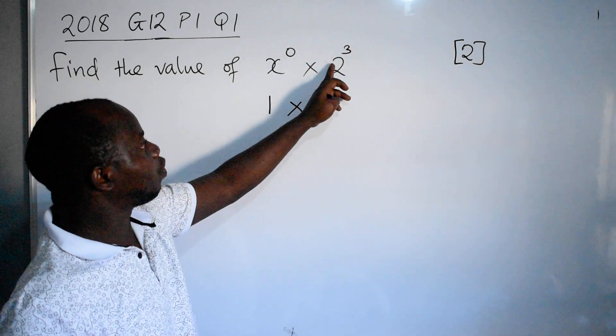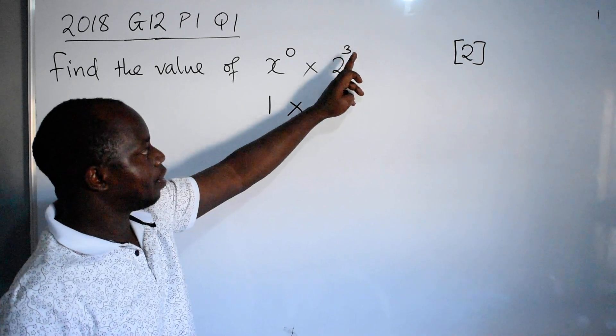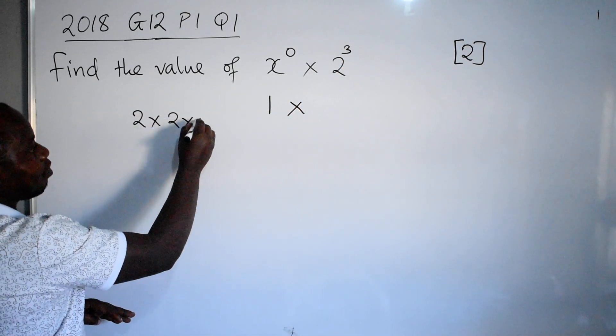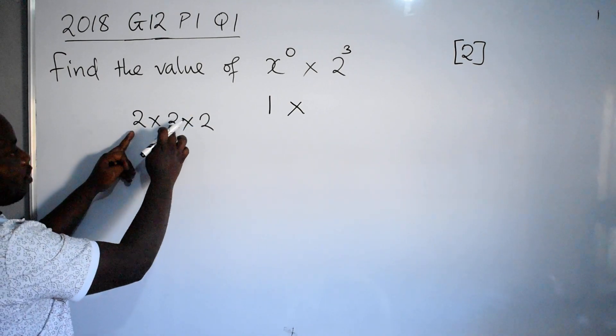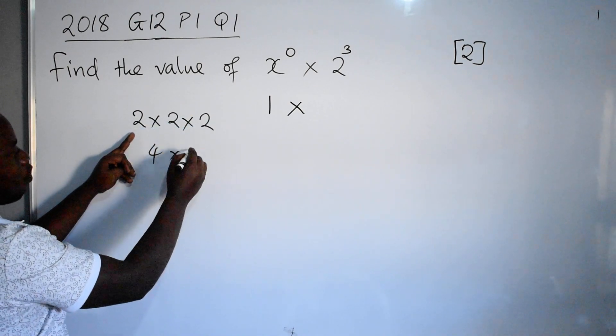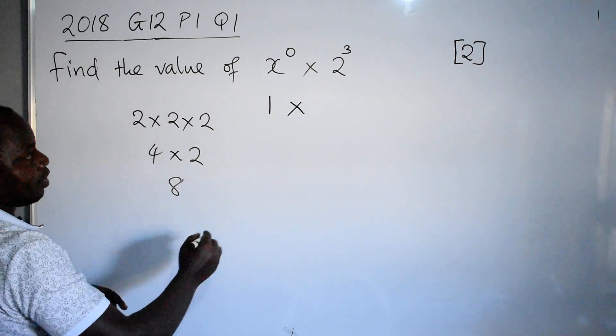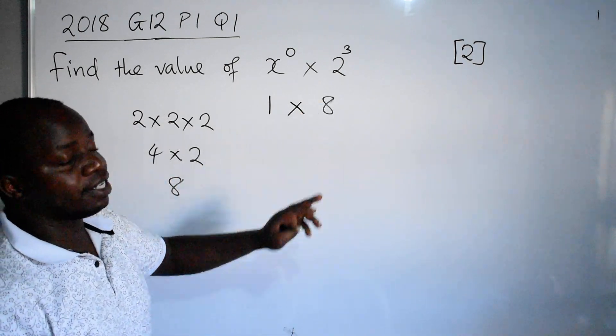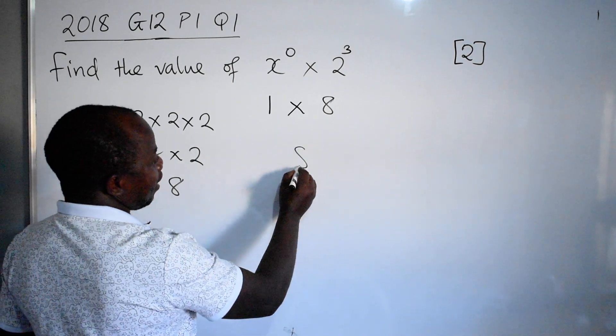This does not mean 2 times 3, no. It means 2 times 2 times 2. So 2 times 2 will give you 4, times 2, this will give you 8. So here we have 8. Then 1 times 8, the answer is 8.